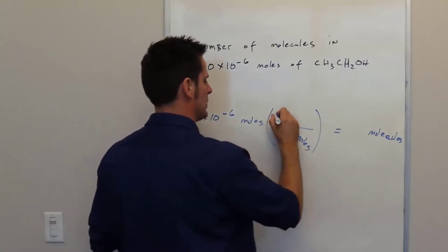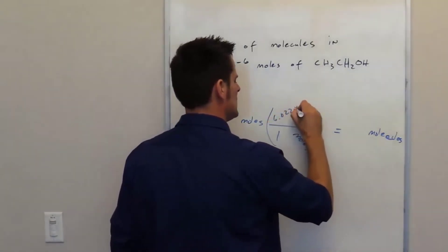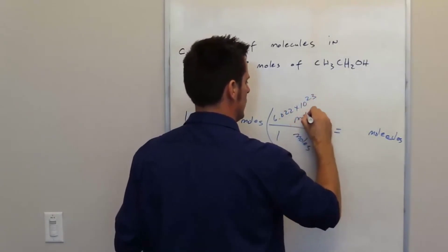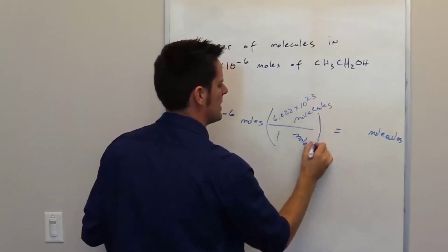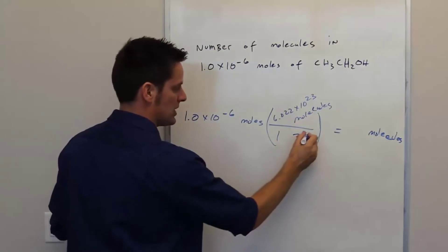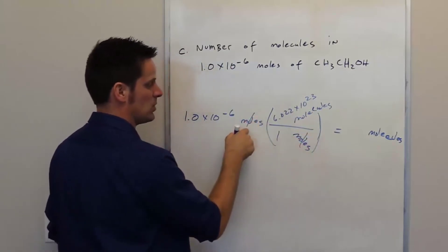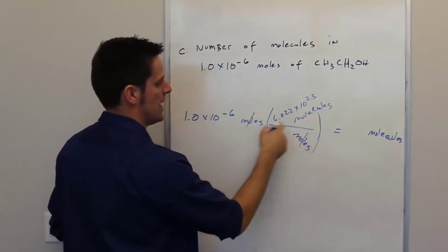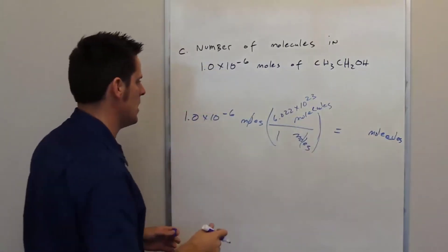One mole is always equal to 6.022 times 10 to the 23rd molecules. The moles cancel out here in the basement with the moles up here in the numerator, and now I'm left with units of molecules, which is exactly where I'm trying to go.